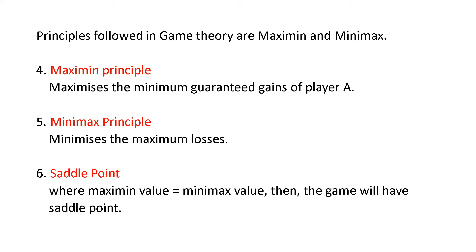Next, two principles are there: maximin and minimax. The maximin principle maximizes the minimum guaranteed gains of player A — you take the minimum values and from those select the maximum. The minimax principle minimizes the maximum losses — you take the maximum values and from those select the minimum. These are the two principles in game theory, and they will be clearer when we work through problems.